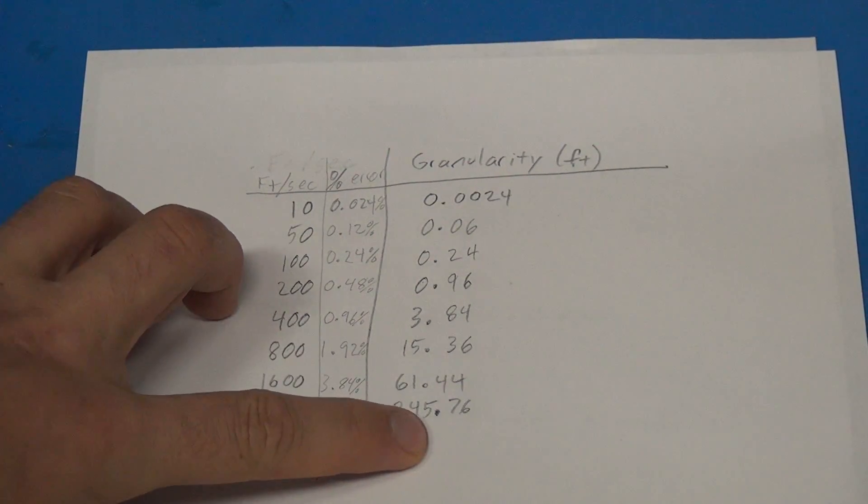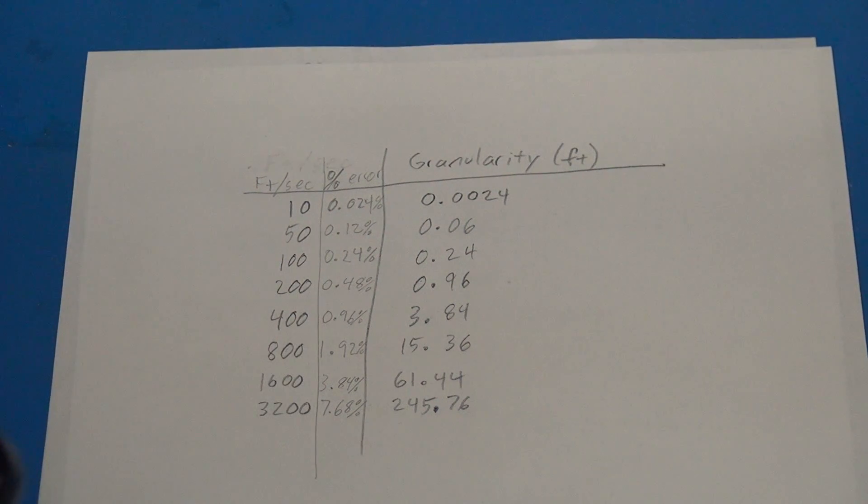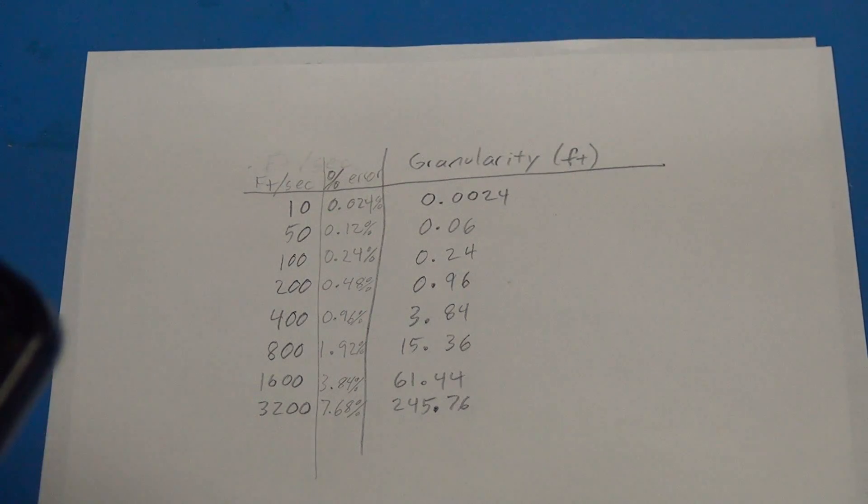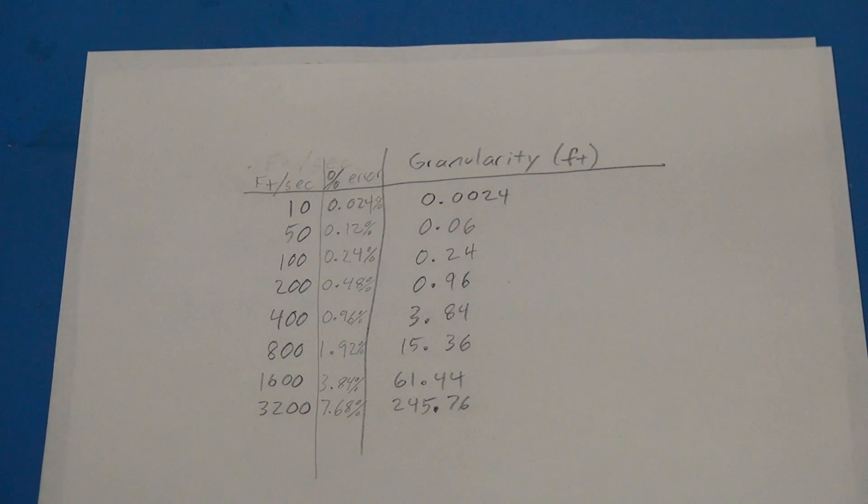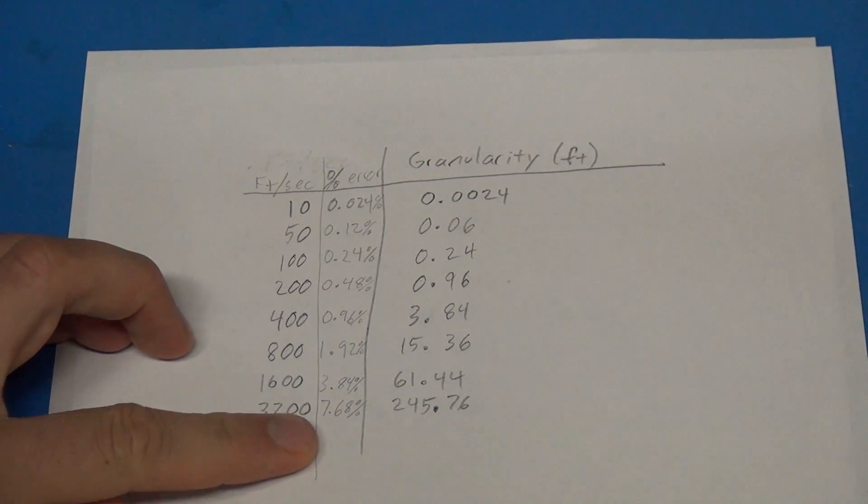If you have one of these really high-speed projectiles, let's say you've got the 3,200 feet per second projectile, so you've got 7.68 percent. So what you'd end up with for this 3,200 feet per second, if you had the sensor 15 inches away from your target, would be a little over one inch of error.